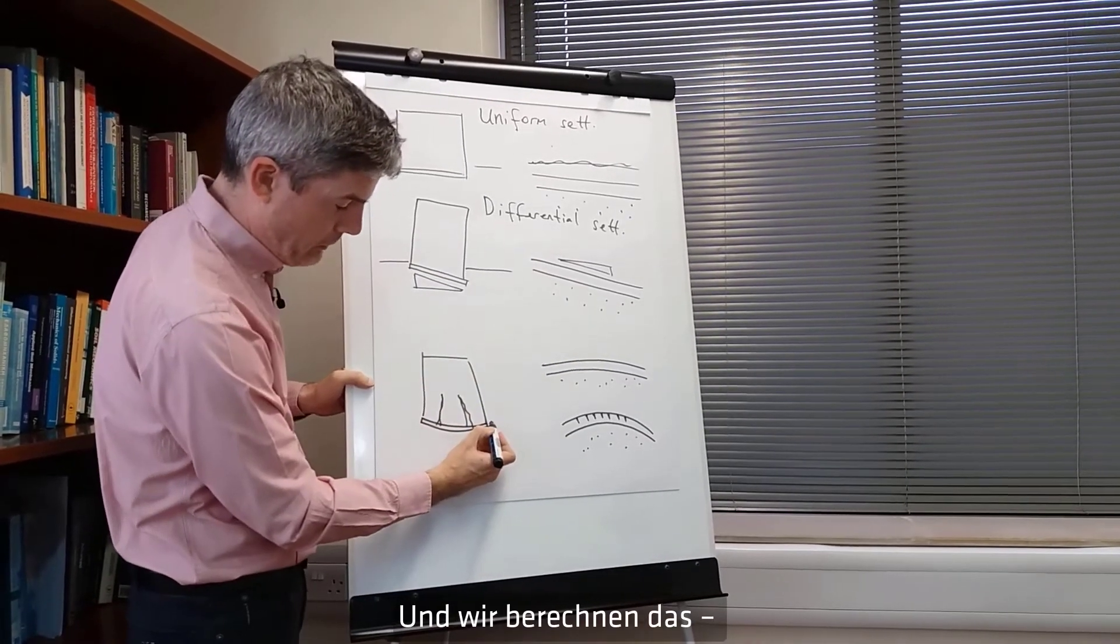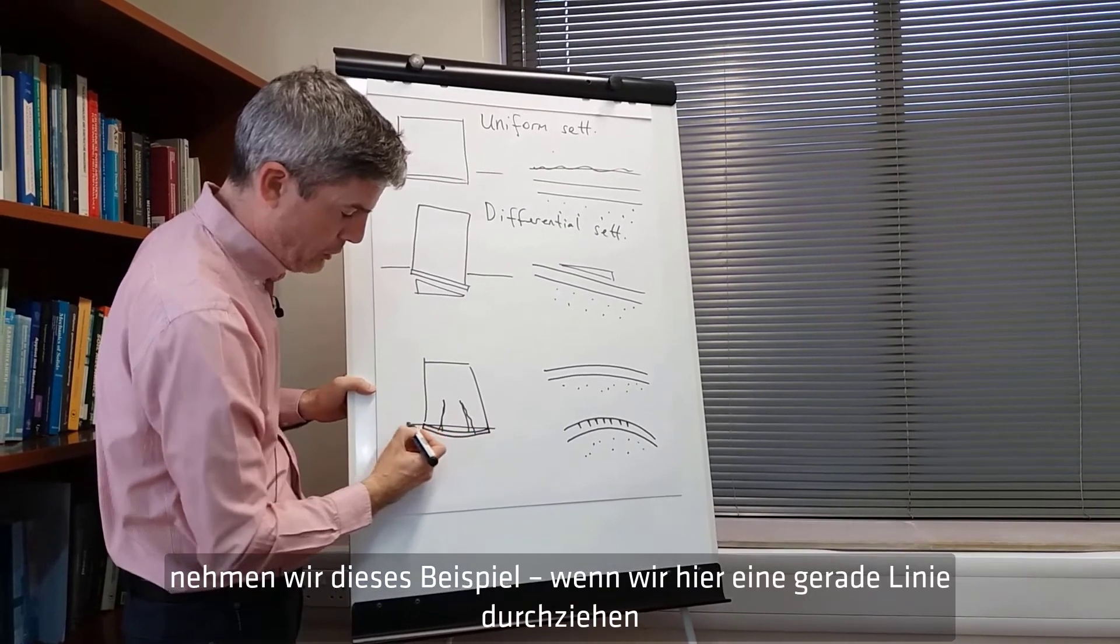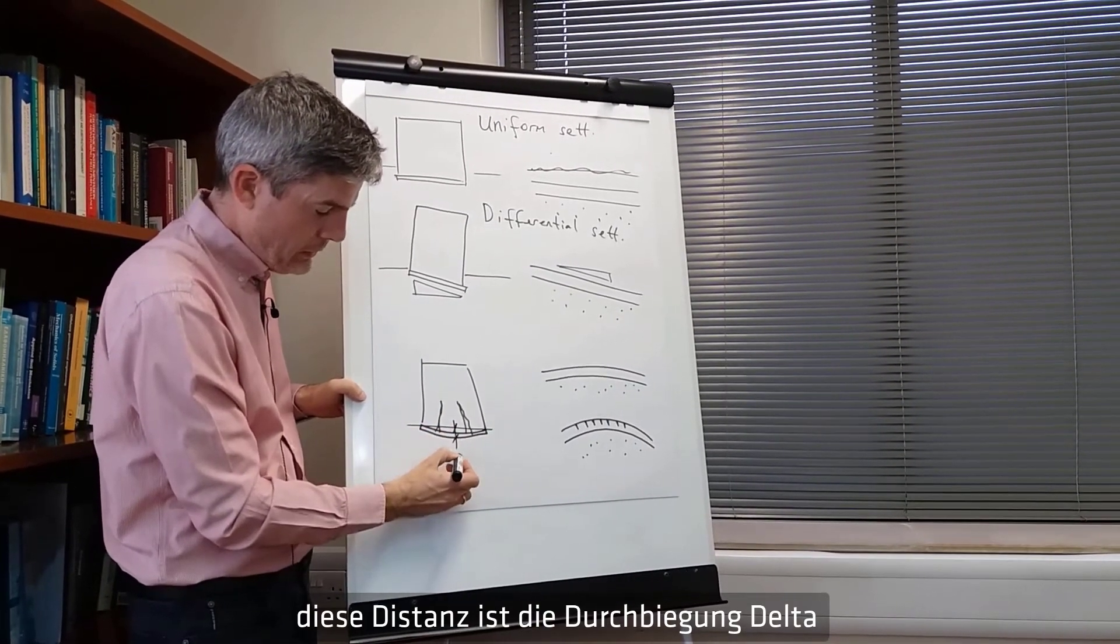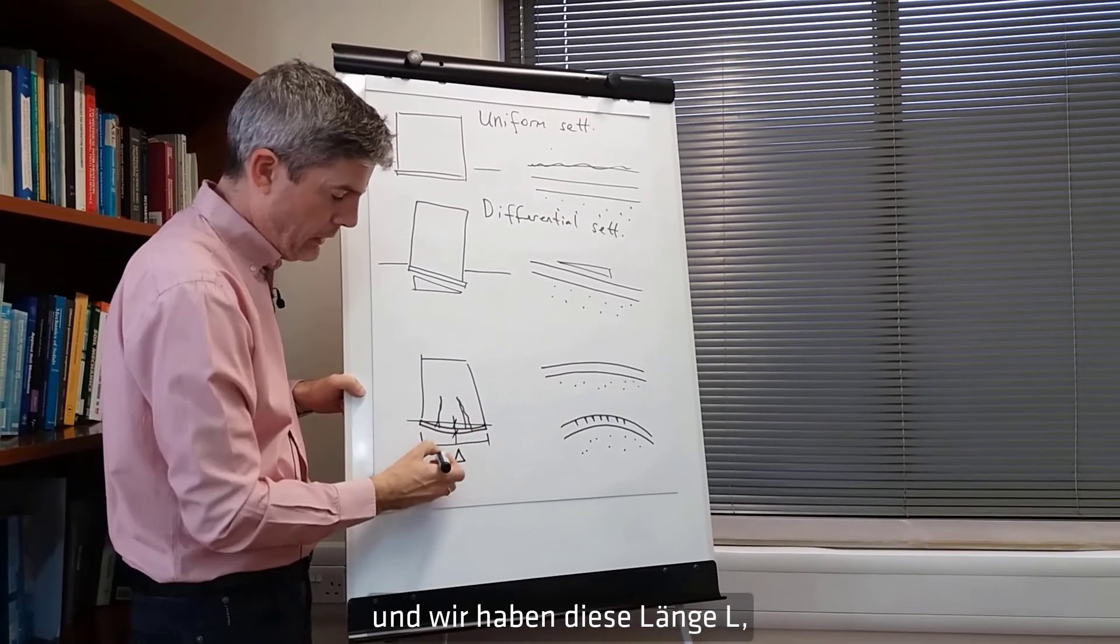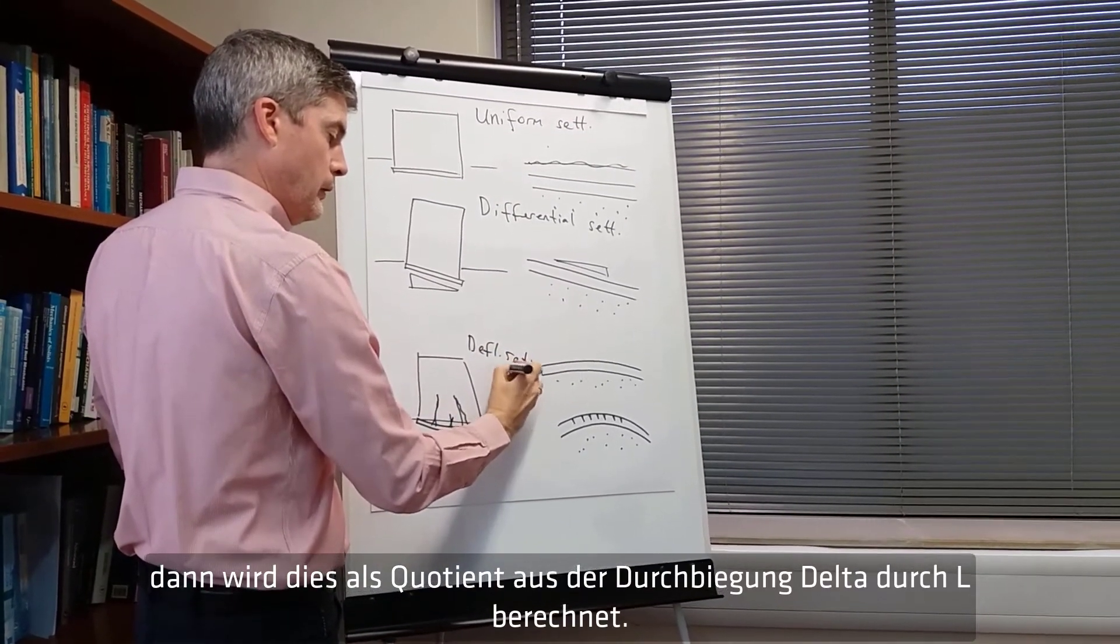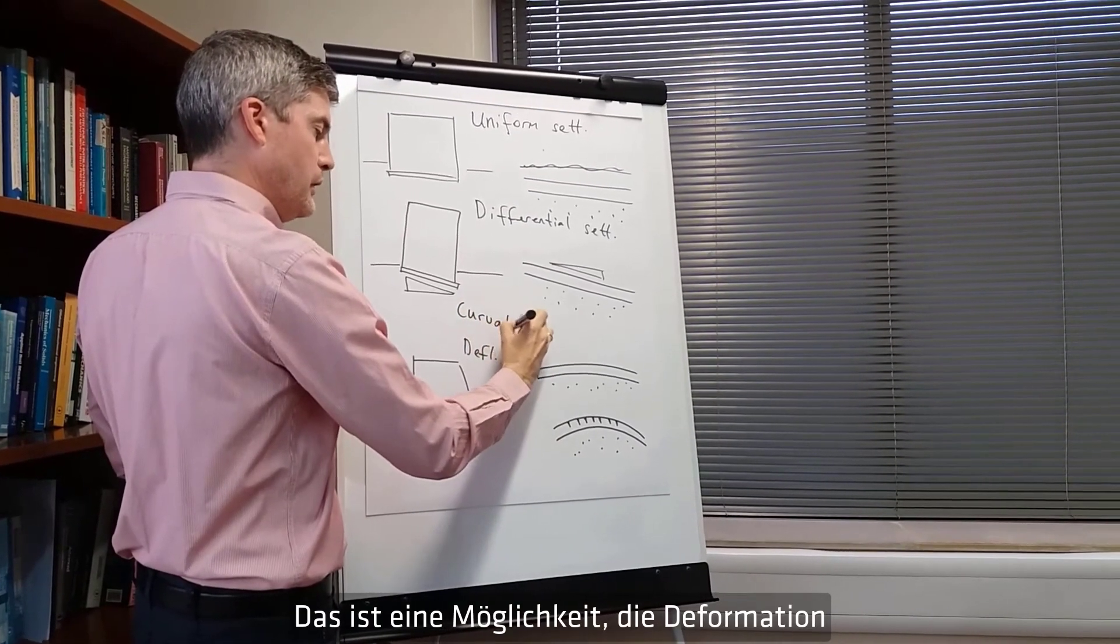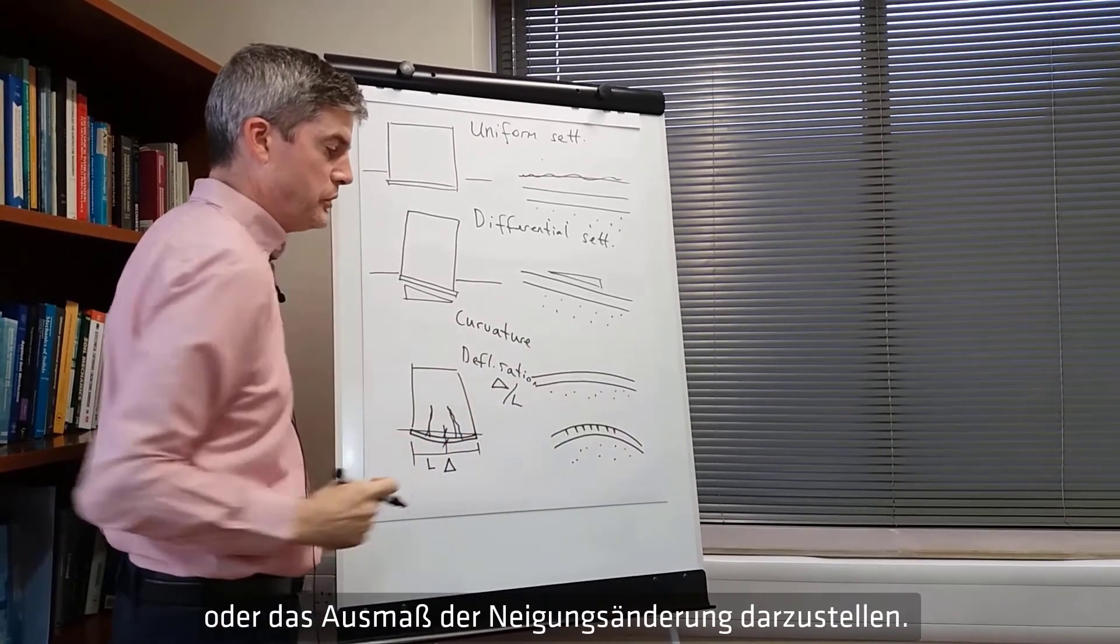And we measure that. Let's take this example. If we drew a straight line across there, that distance there is the deflection delta. And we have that length there is L. So that is expressed as the deflection ratio delta over L. That is one way to express the curvature or the amount that the slope is changing.